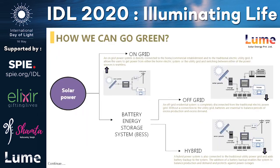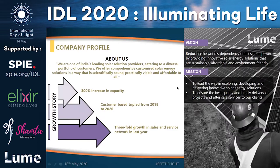There are two options for solar energy: on-grid systems, which are connected directly to the grid and used in urban areas, and battery energy storage systems, used in rural or off-grid areas. Lume Solar's vision is making clean energy available and affordable for everyone by harnessing the power of light and sun. Our vision is to reduce world dependency on fossil fuels by providing innovative solar energy solutions, with our customer base tripling from 2018 to 2020 across pan India.